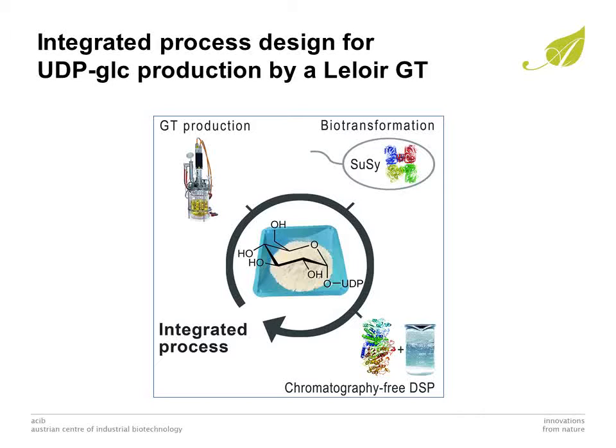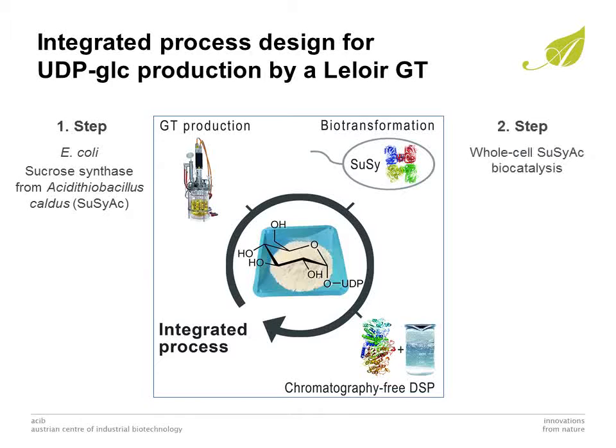Nucleotide sugar-dependent glycosyl transferases, so-called Leloir glycosyl transferases, represent a new paradigm for the biocatalytic production of glycosides as fine chemicals. However, the process technology for their effective use isn't well established, and we demonstrate in our study of UDP-Glucose production by Sucrose Synthase from Acidithiobacillus caldus that integrated process development is key to the success of a glycosyl transferase process. We considered the interrelation of all tasks including the biocatalytic production, the biocatalytic process, and the downstream processing right from the beginning — and this was essential to realize UDP-Glucose production at about 100 g scale.